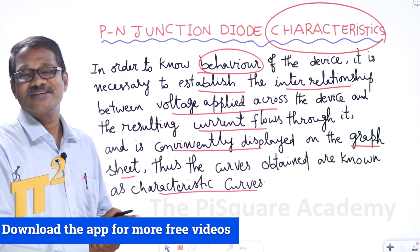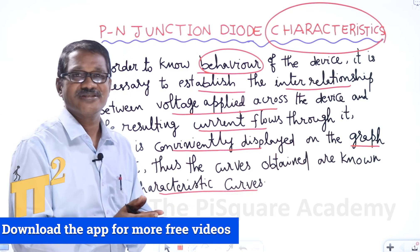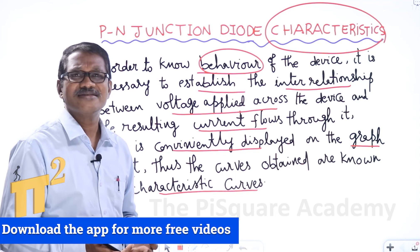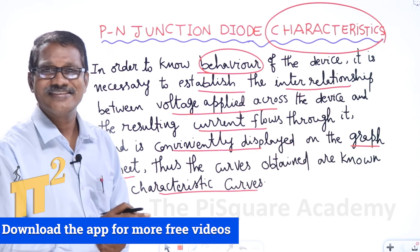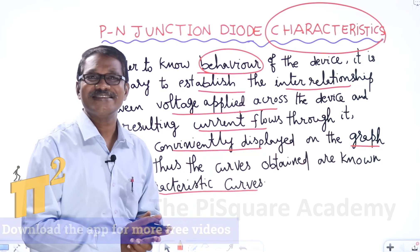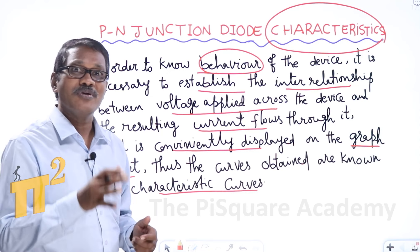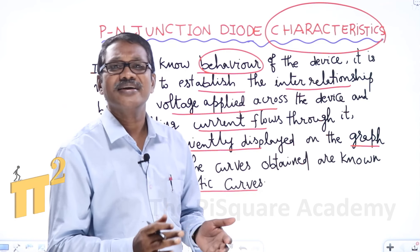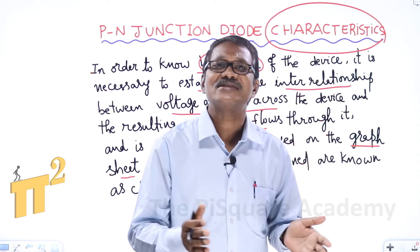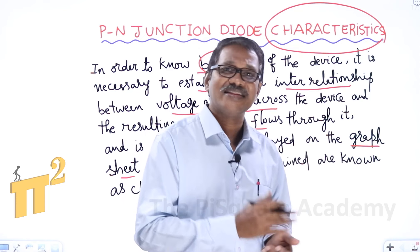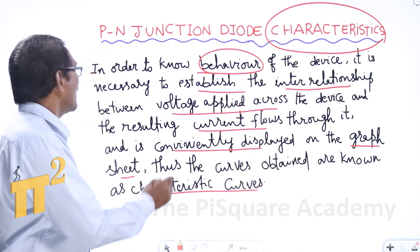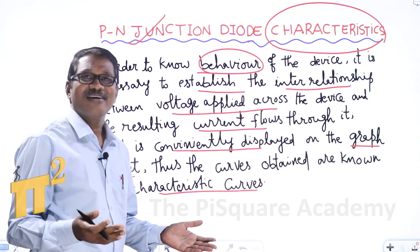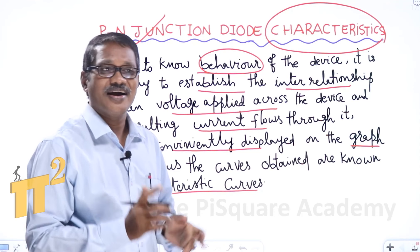The prime motivation of characteristic curves is to know the behavior of the device. If we know the behavior of the device, we will have some sort of control over it. We should know the behavior by establishing the interrelationship between voltage applied across the device and the resulting current flowing through it. Currently, we are working with a P-N junction diode.